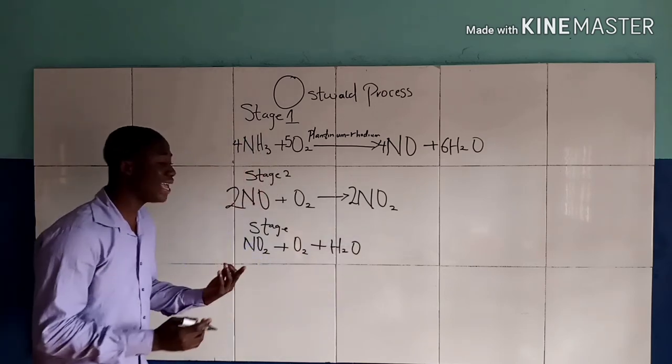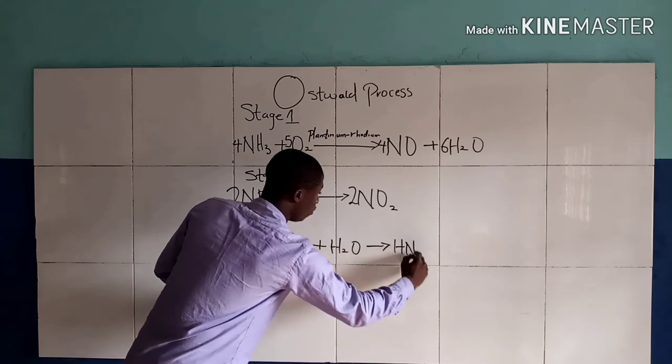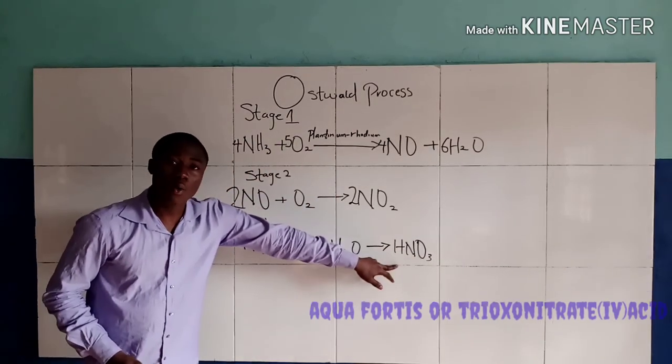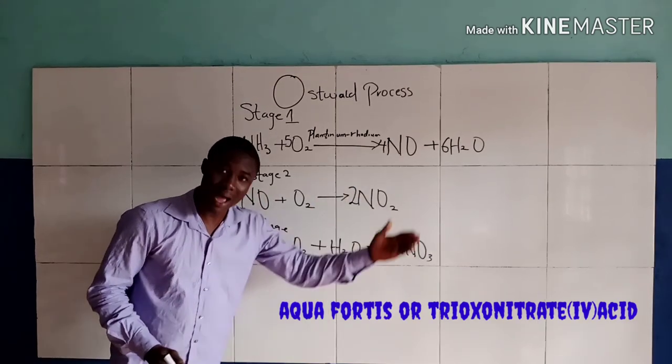Okay? So, we get the product to be HNO3. HNO3 is called aqua-fortis or trioxonitrate 5-acid.